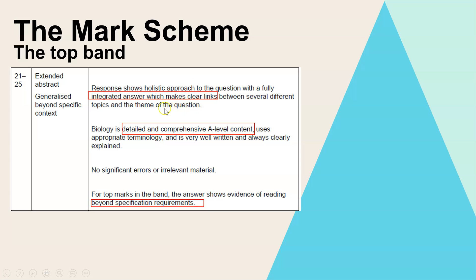The theme of the question or the title always starts with 'the importance of' and then it states the topic area. So for every topic area you'll be describing and explaining that process or information and then you have to say why that is important — it might say organisms in biology or processes in the rest of the question.